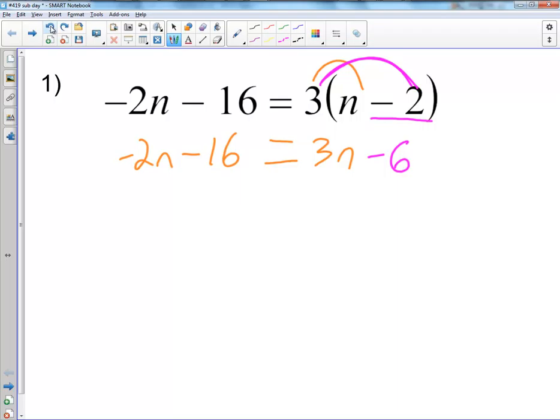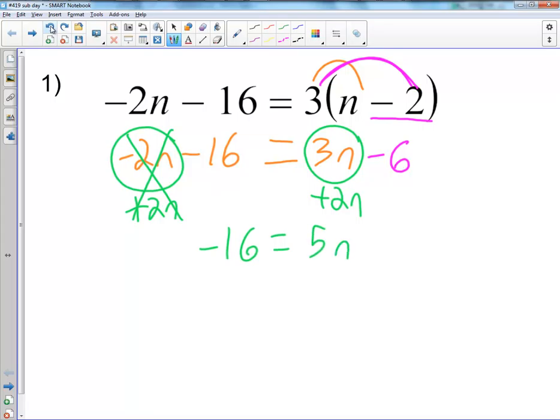Next step is I want to take a step back and see where are my variables. So I'm going to circle my variables and I have 2 variables. The next thing I'm going to think about is where's more of the variables at. Well, I have positive on the right and negative on the left. So the hater is now the smaller variable which is the negative 2n. The opposite of negative 2n is positive 2n, so I'm going to add 2n to both sides. This is going to cancel out. I'm going to be left with negative 16 equals 5n minus 6.